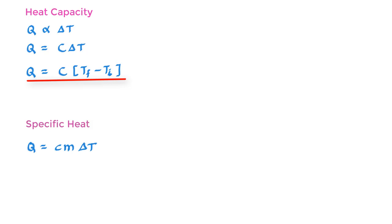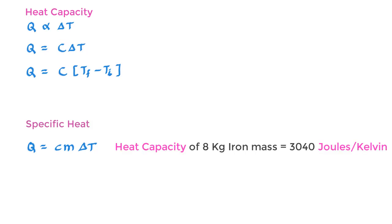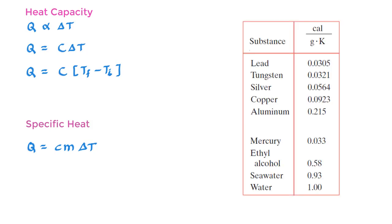While heat capacity of 8 kilogram mass of iron could be 3040, the specific heat of iron is 380 joules per kilogram kelvin, which is nothing but the heat required to raise 1 kilogram of iron by 1 kelvin. Here is a list of specific heat of some substances. You can see that water really has high specific heat, or in other words the heat required to raise the temperature of 1 gram or kilogram of water is higher than the other substances listed here.